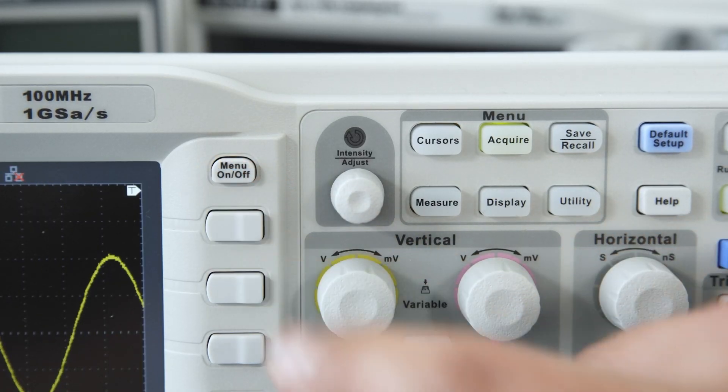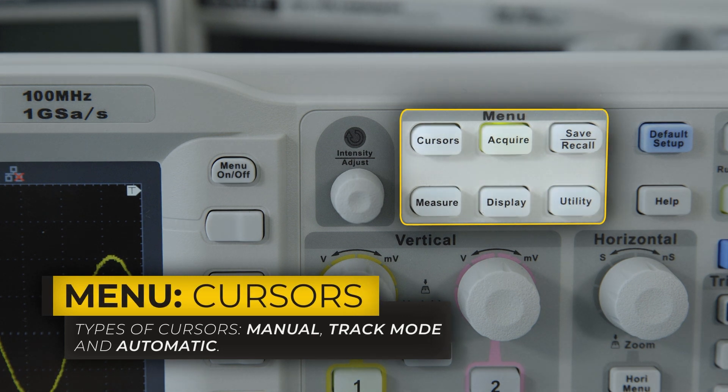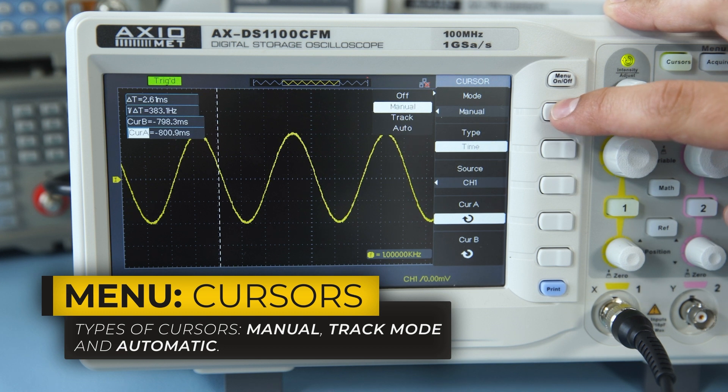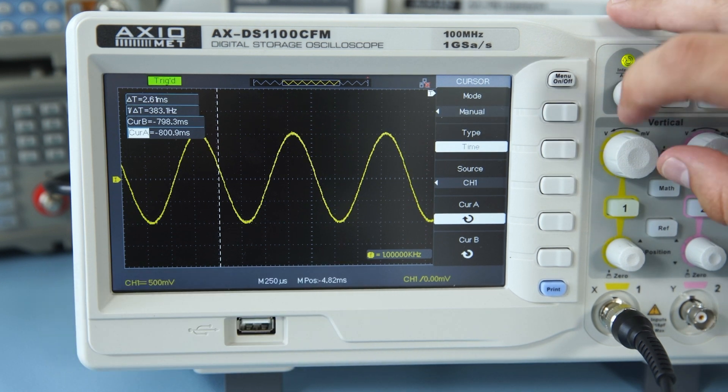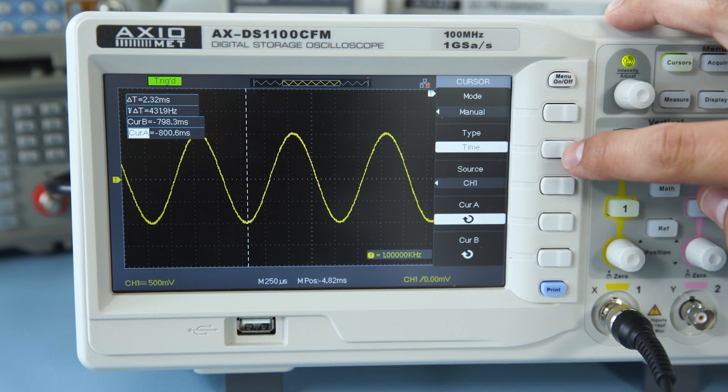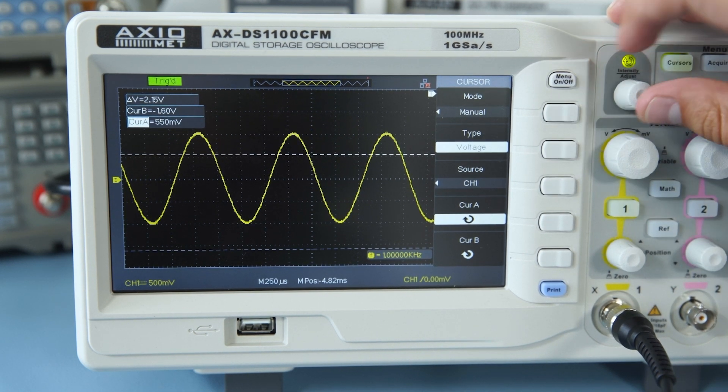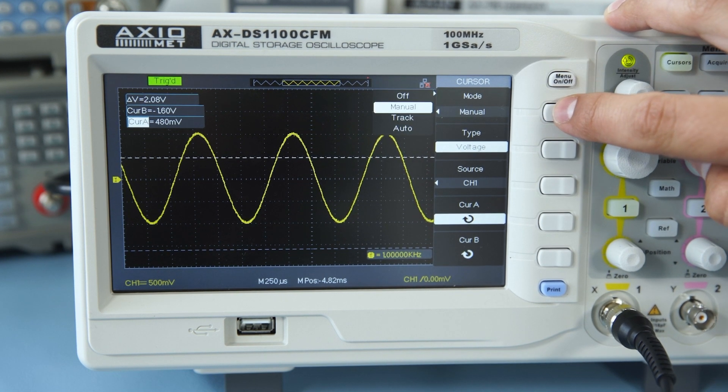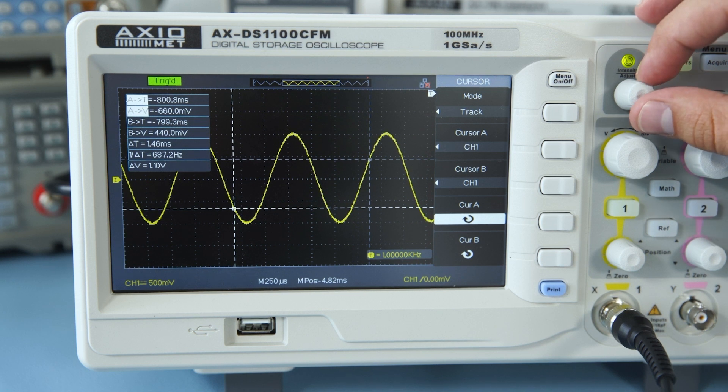After signal acquisition, we can perform some measurements. First, we will cover the Cursor menu and then the automatic measurements. There are three types of Cursors to choose from: Manual, in which the Cursors are adjusted by the user with the Universal knob, and Track mode, in which the Cursor is following the signal.